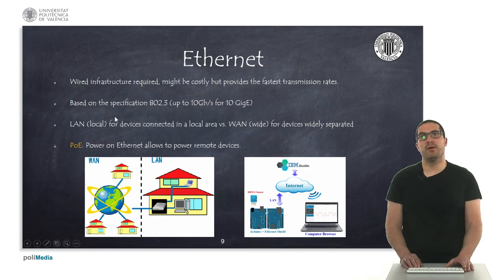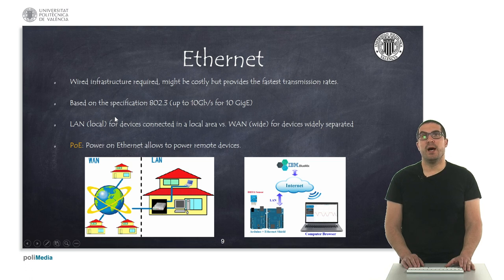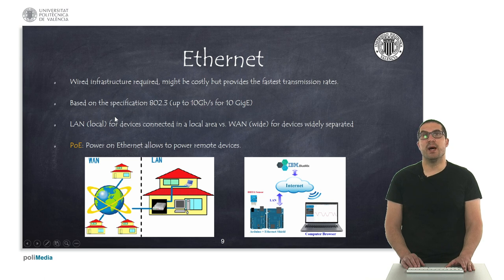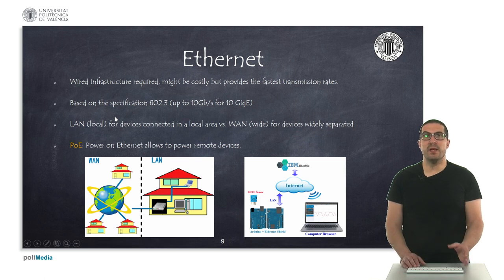Moving into specific communications used in IoT applications, we have Ethernet, one of the basic ones. It's a wired infrastructure, which can be costly if we need to run wires around a home. It's based on the 802.3 specification and is fast, reaching high transmission rates and is quite stable. It connects to a LAN or WAN. One special characteristic is Power over Ethernet, where power is also supplied through the wire, allowing us to remotely power specific devices.